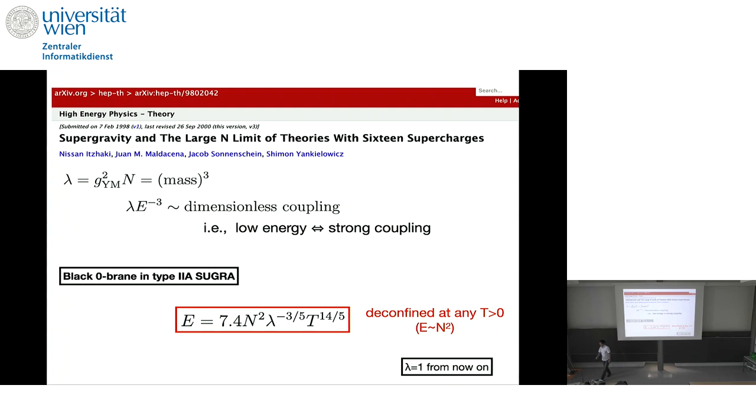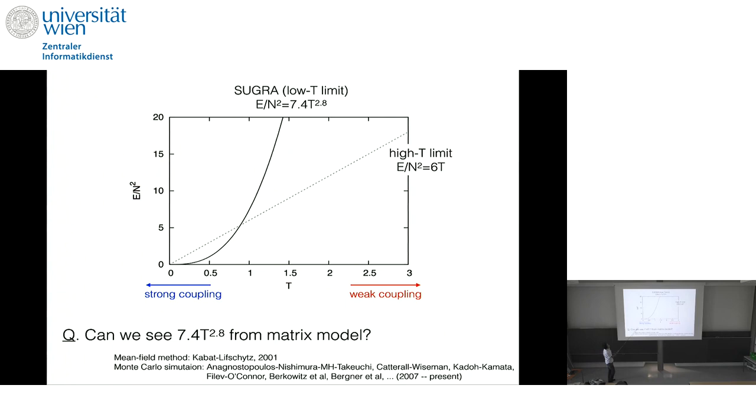So, so supergravity limit, supergravity should be good at low temperature, or strong coupling, and the way e over, divided by n square, it should become 7.4 times T to the 2.8.